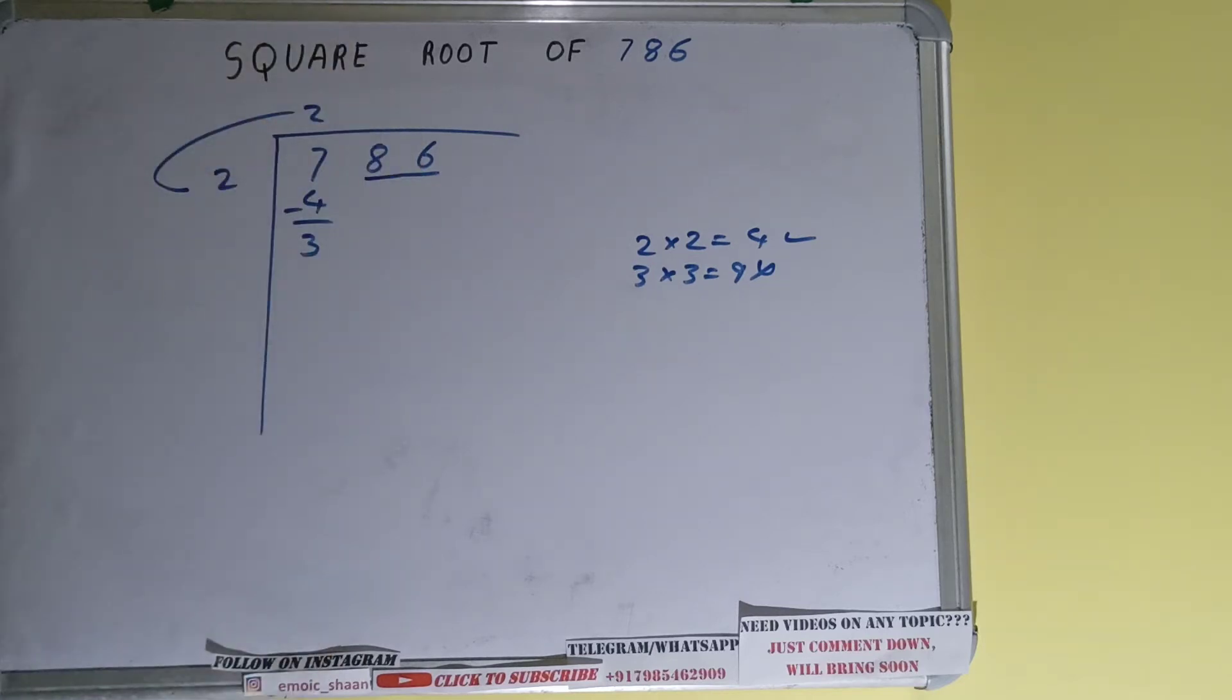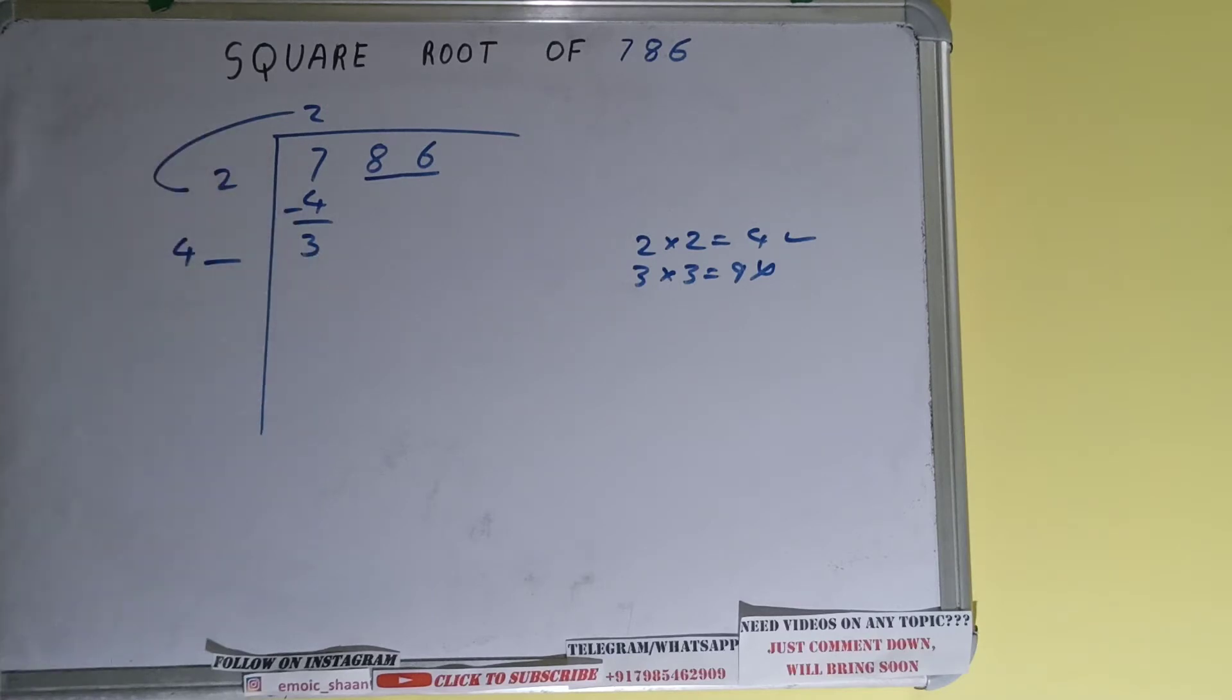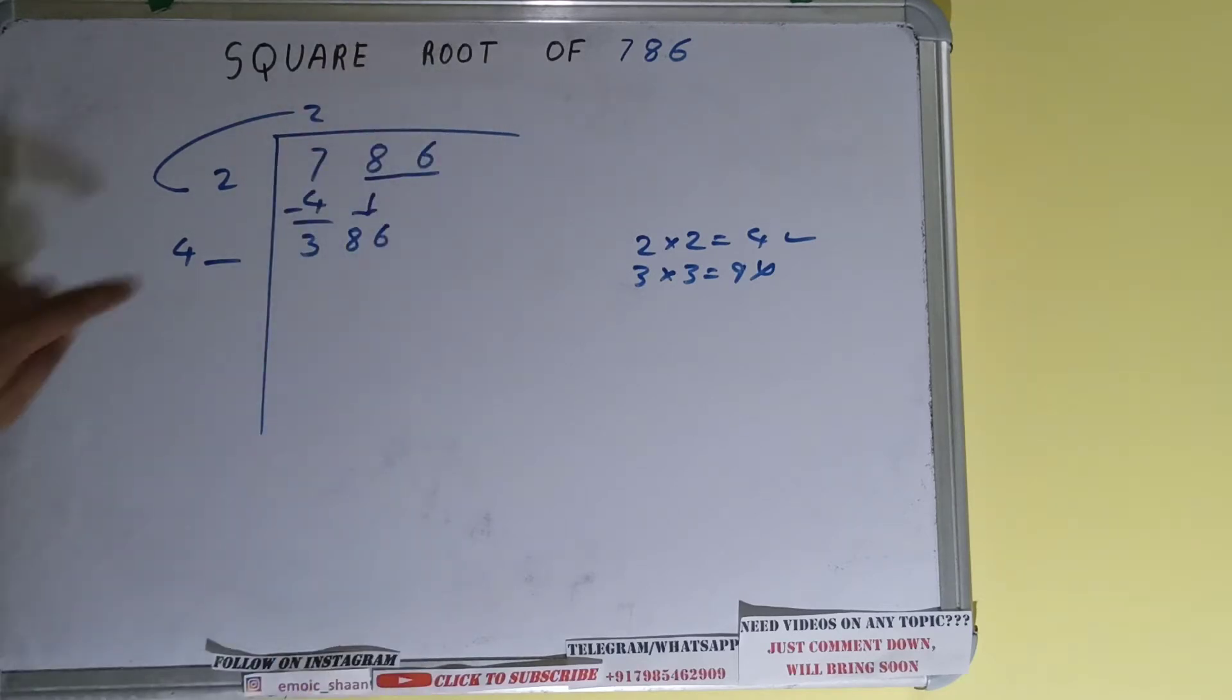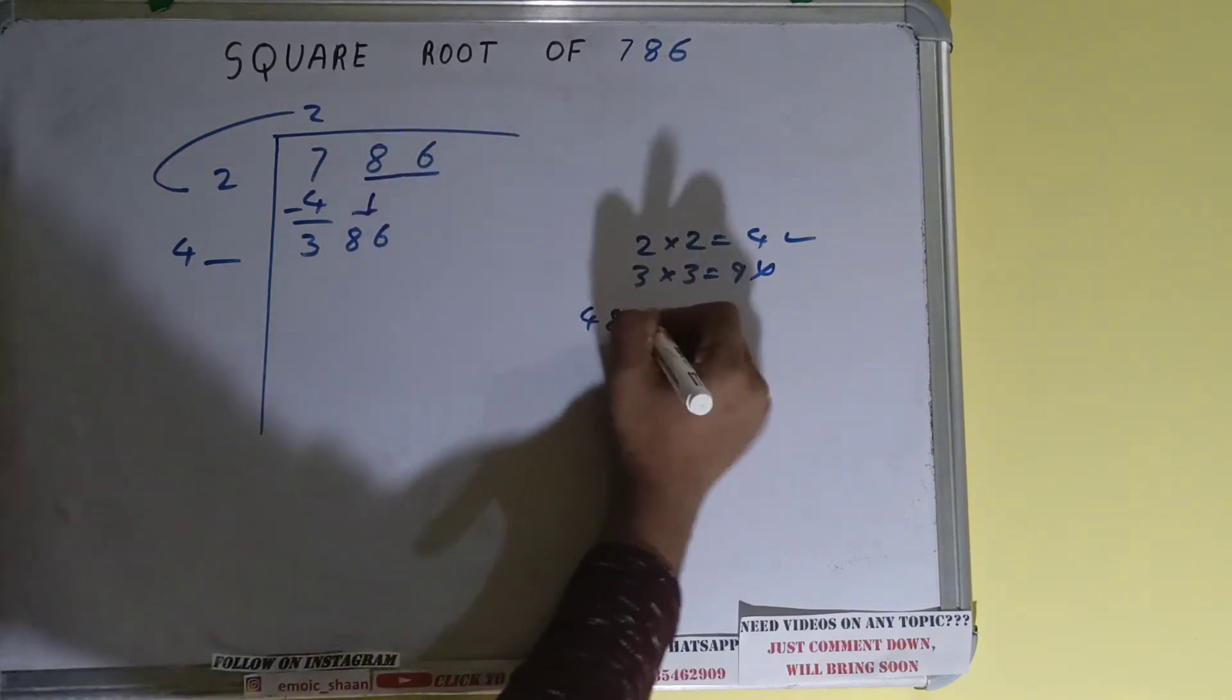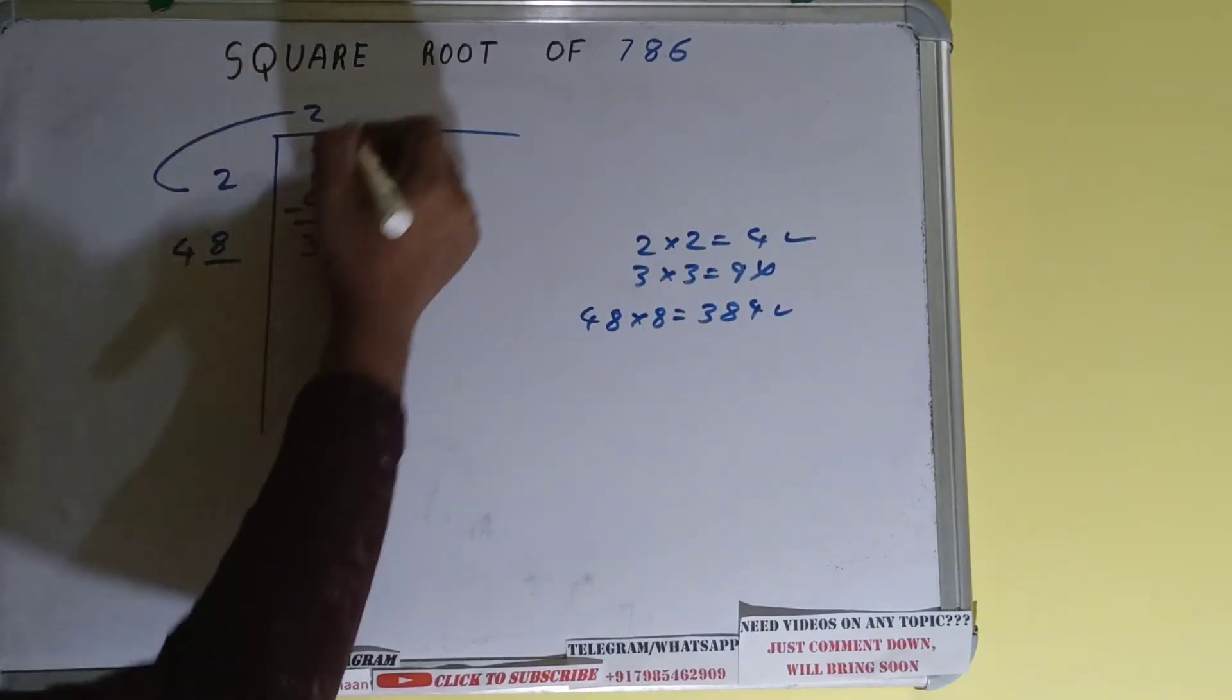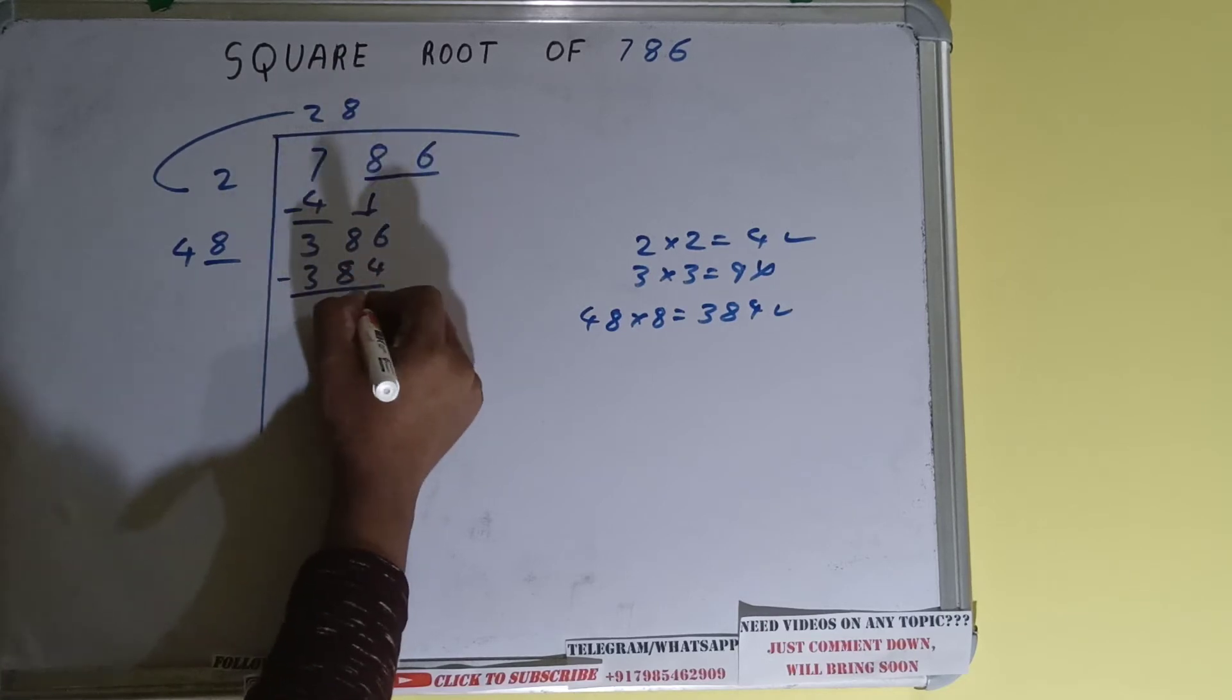And this number we need to make it big so that we can divide. So bring the next pair down and it will become 386. Now whatever number we write here we have to write here also. So if we try 8, 48 into 8 it will be 384, which is good to take. So 8 here and 8 here, 384, and on subtracting 2 will be left.